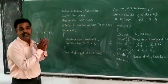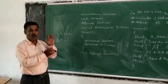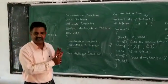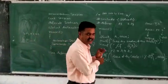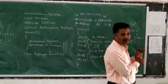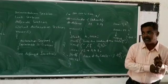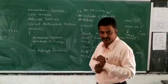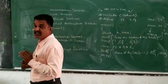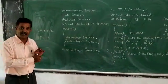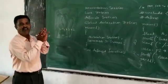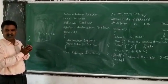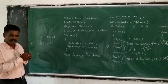The structure of a C program consists of: documentation section, link section, define section, global declaration section, main section with opening brace, local declaration section, executable statements, and user-defined functions. This is the structure of a C program. We will continue with the next class and next topic. Thank you.